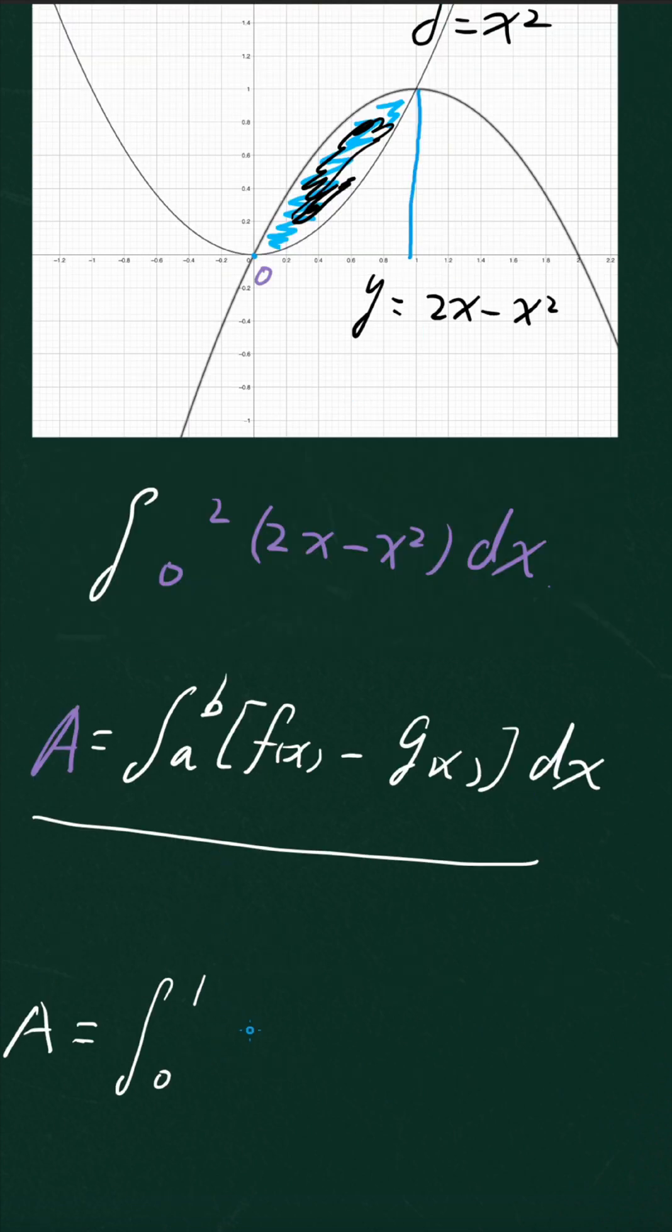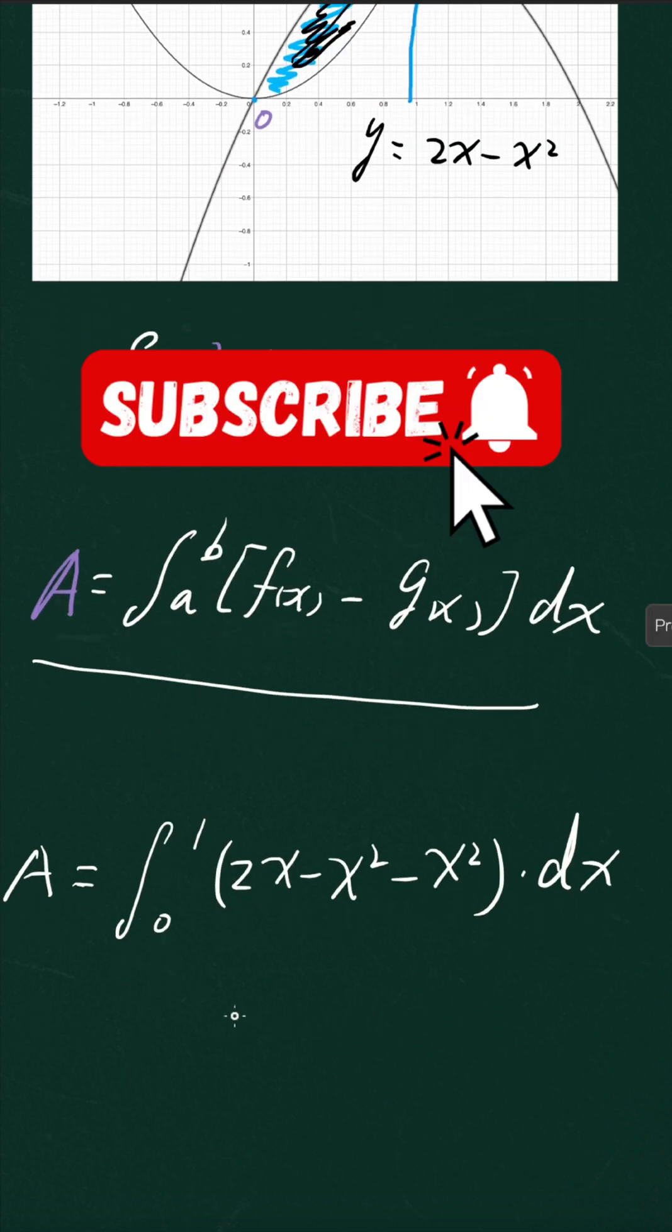That's why the integral is going to be from 0 to 1. So it's going to be 2x minus x squared minus x squared. The integral of this whole thing is going to be equal to 1 over 3.